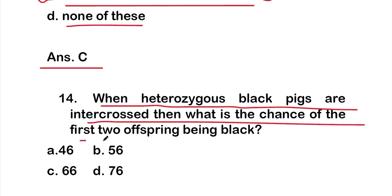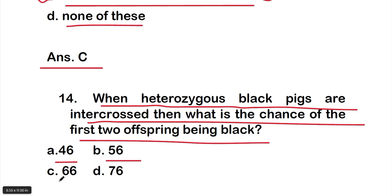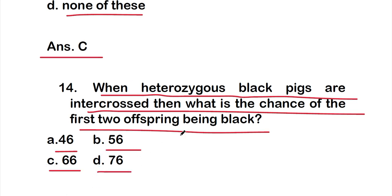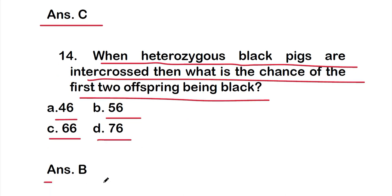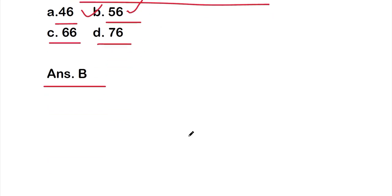Question fourteen: when heterozygous black pigs are intercrossed, what is the chance of the first two offspring being black? Options: A: 4/6, B: 5/6, C: 6/6, D: 7/6. The right answer is option B, 56 percent (i.e., 9/16 × 9/16 ≈ 56%).